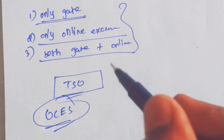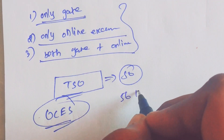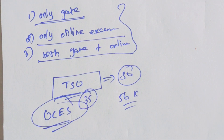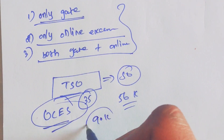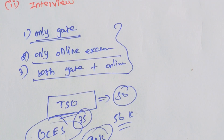SO means Scientific Officer. The pay scale for a Scientific Officer is around 56,000, and with stay and travel allowances included, the total comes to approximately 90,000 per month. It is a high paid salary, and once you are selected, life is tremendous.